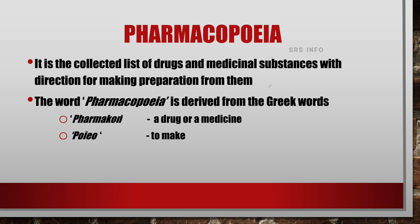One of the most important topics we have to understand in Pharmaceutical Chemistry is Pharmacopoeia. Every pharmacist should know about Pharmacopoeia. The word Pharmacopoeia is derived from two Greek words: Pharmacone, meaning a drug or medicine, and Poio, meaning to make. So this is the list of drugs and medicinal substances with directions for making preparations from them.